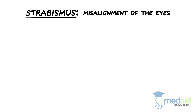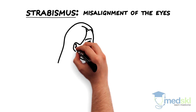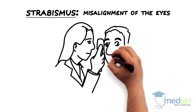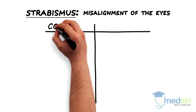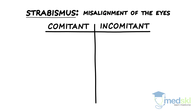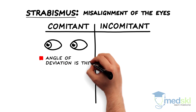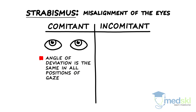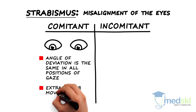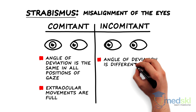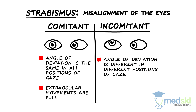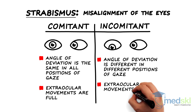Strabismus, or misalignment of the eyes, can have many different causes. When I examine a patient with strabismus, I always try to determine if the strabismus is comitant or incomitant. Comitant strabismus means that the angle of deviation is the same in all positions of gaze and the extraocular movements are full. Incomitant strabismus means that the angle of deviation is different in different positions of gaze and the extraocular movements are not full.